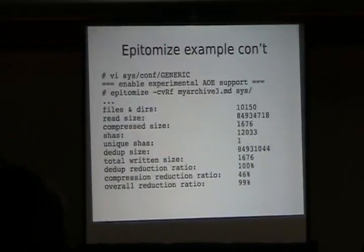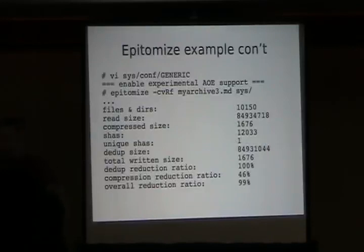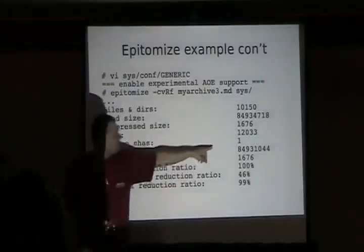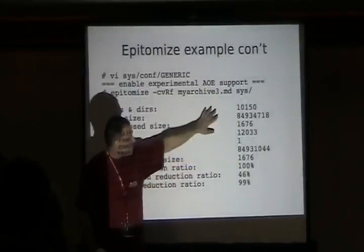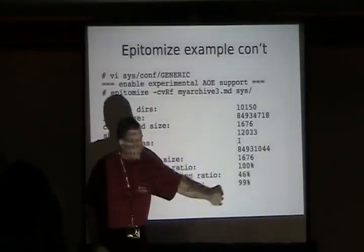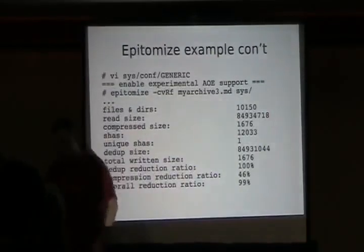As an example, what I did is actually edit sys/conf/GENERIC and enable the experimental AOE support, then ran the backup again. As you can see, pretty much everything is the same again — the same numbers — but we achieved this time a 99% reduction.